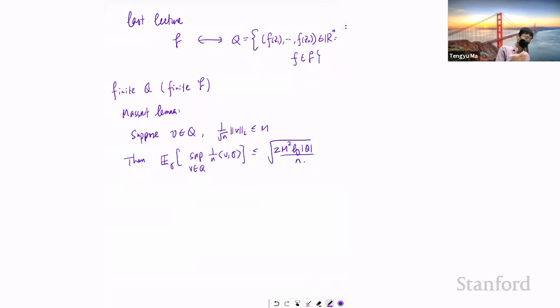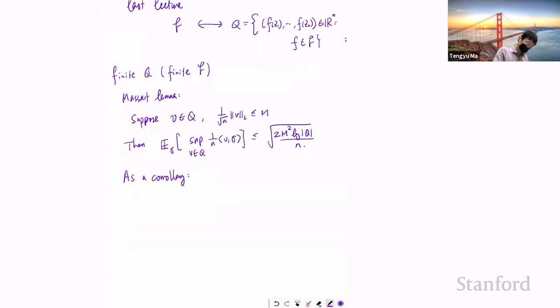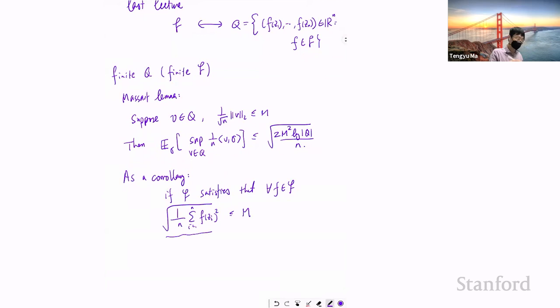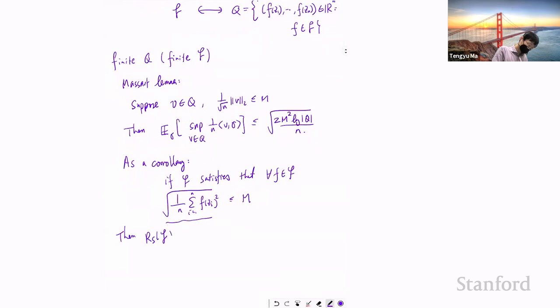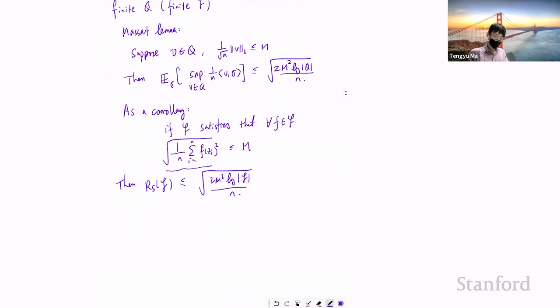Translating this back to the function class: if F satisfies that for every f in F, the average quadratic mean is bounded by m, then the Rademacher complexity of F is bounded by 2m^2 * log|F| / n.